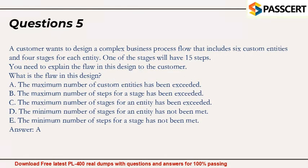Question 5: A customer wants to design a complex business process flow that includes six custom entities and four stages for each entity. One of the stages will have 15 steps. You need to explain the flaw in this design to the customer. What is the flaw in this design? A. The maximum number of custom entities has been exceeded. B. The maximum number of steps for a stage has been exceeded. C. The maximum number of stages for an entity has been exceeded. D. The minimum number of stages for an entity has not been met. E. The minimum number of steps for a stage has not been met. Answer: A.